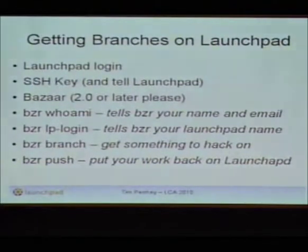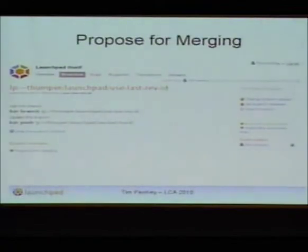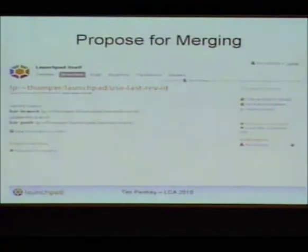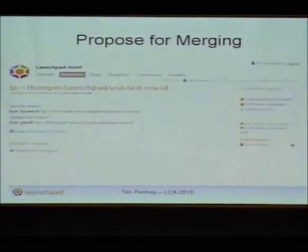You want to do bzr branch to get something to hack on, obviously commit and do some fixes, then push it back up to Launchpad. Once you have a branch on Launchpad, you'll have a page that looks something like this. To initiate the code review process, you want to propose it for merging — which is this link here. And now I've got a laser pointer! This is a branch page representing a feature branch in Launchpad. It was created by me; it's on the Launchpad project. This tells other people how to grab that branch.